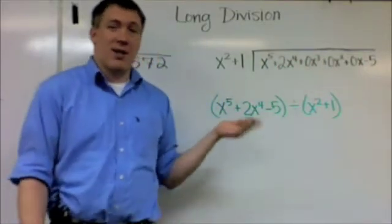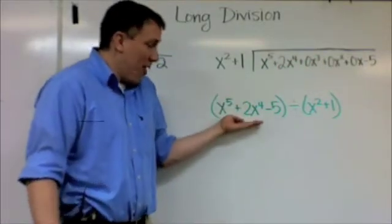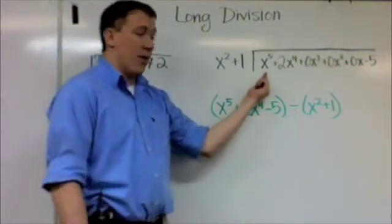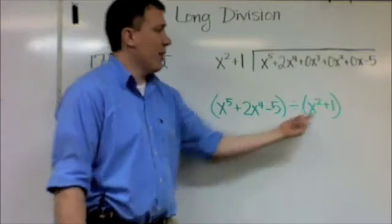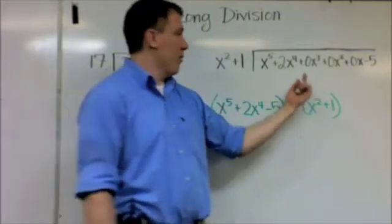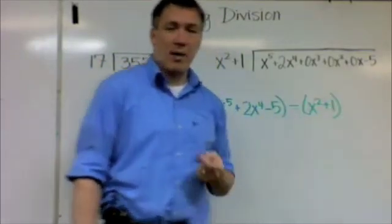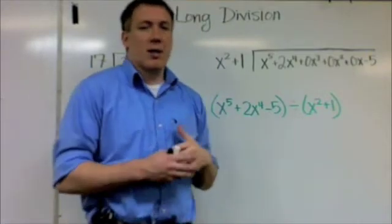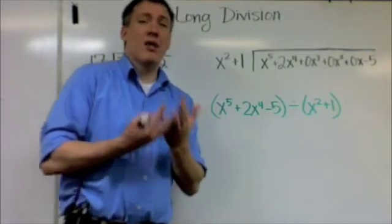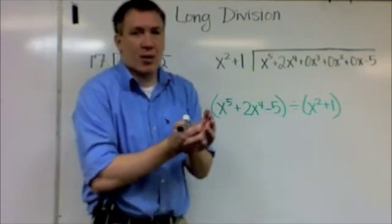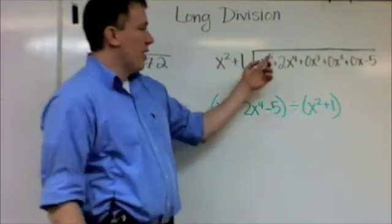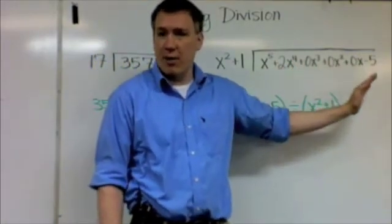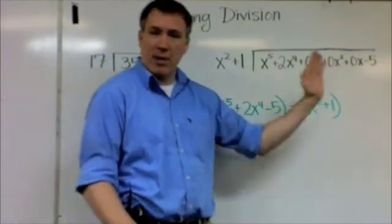Now you may notice something kind of different about this and that. And if you look, I have x to the fifth here, I have 2x to the fourth there, and I have minus five there. But in between there, between 2x to the fourth and minus five, I have three extra things. And this is because I need placeholders. I need placeholders for these other powers. Here's to the fifth power, there's to the fourth power, but there's nothing to the third, to the second, to the first in this polynomial. So I need a placeholder.